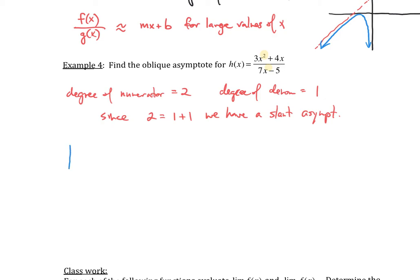So I'm going to draw a division house. And I'm going to put 3x squared plus 4x plus 0 inside the house. One comment I want to mention is you want to make sure all powers of x are represented. And then for the denominator piece that goes outside the house, that's going to be 7x minus 5.